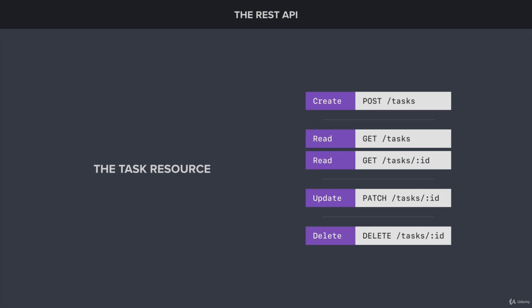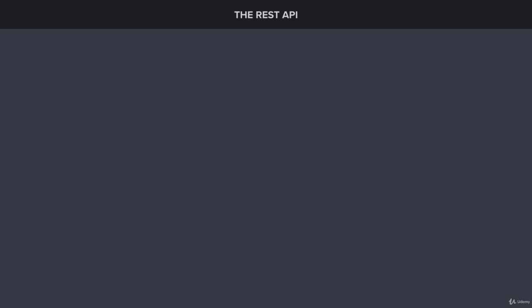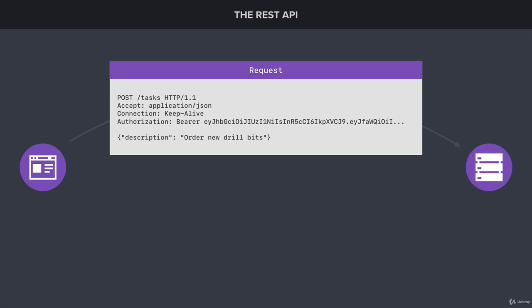Before we go, there's one more thing to talk about. As we put all of this into practice, we're going to be sending hundreds of HTTP requests back and forth between client and server, and it's a good idea to know what exactly makes up an HTTP request. The structure of an HTTP request is text-based. Here I have an example request with three main pieces — the first is line number one, known as the request line, which contains the HTTP method being used, the path, and the HTTP protocol. The combination of POST with /tasks means we're trying to create a new task resource.